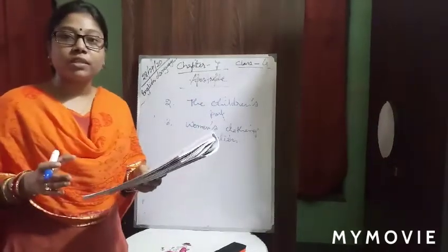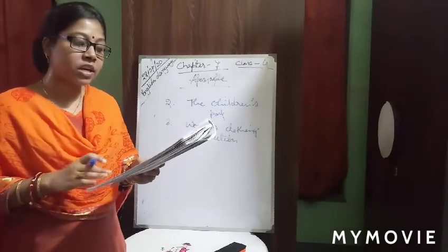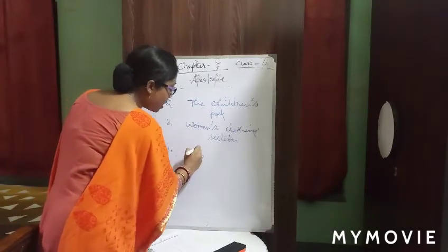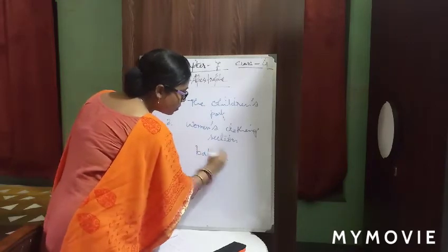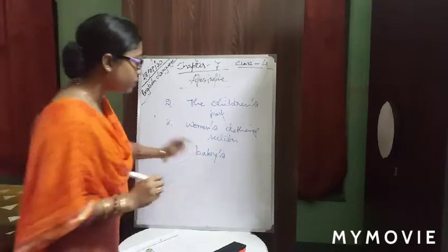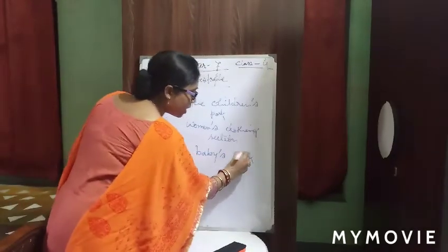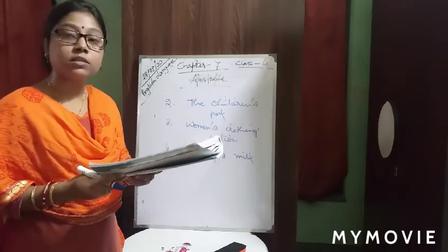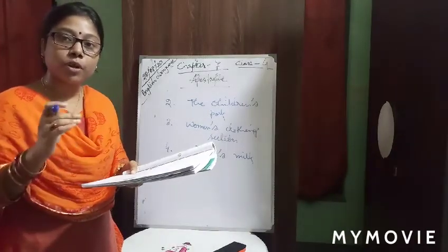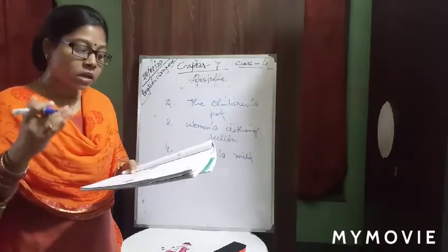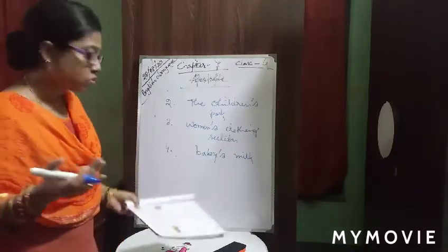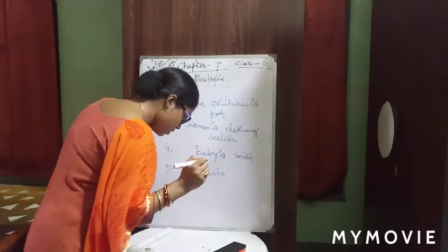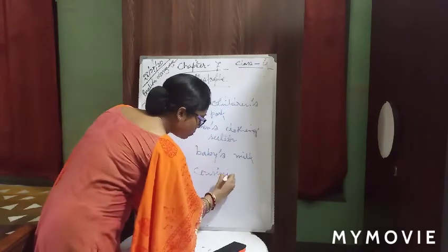Number four: 'The cat drank up the milk for the babies.' Babies already ends with s, so we put the apostrophe after s — 'baby's milk.' The cat drank up the baby's milk. Number five: 'Alicia stayed at her cousins' house.' Cousins ends with s, so we write 'cousins'' — apostrophe after the s. Her cousins' house.